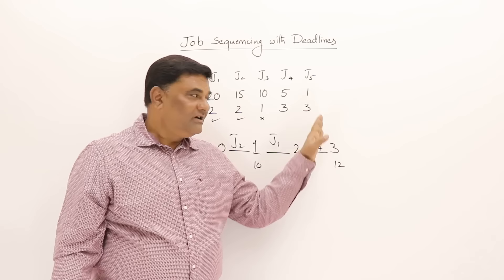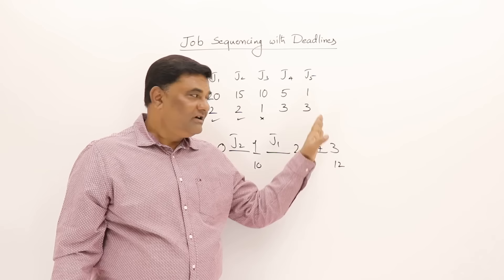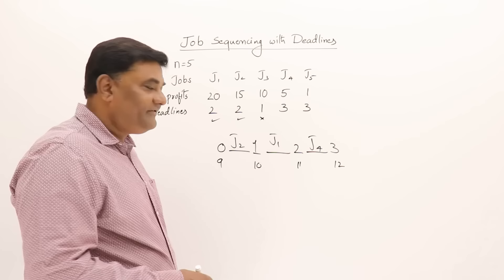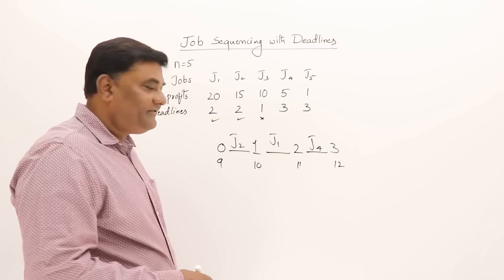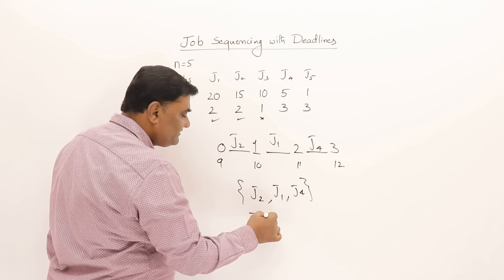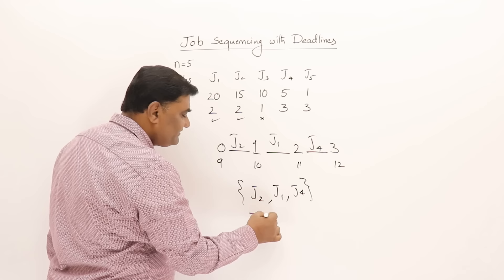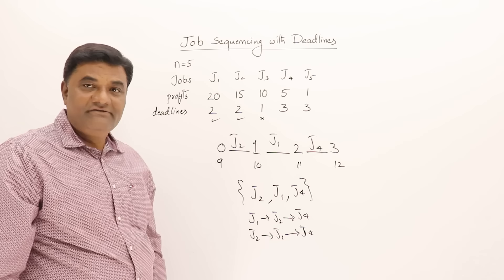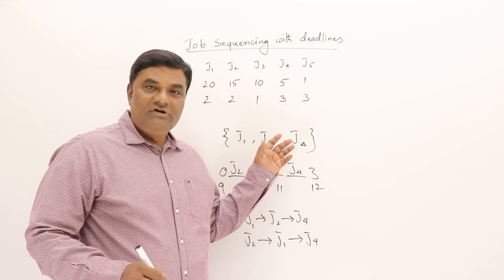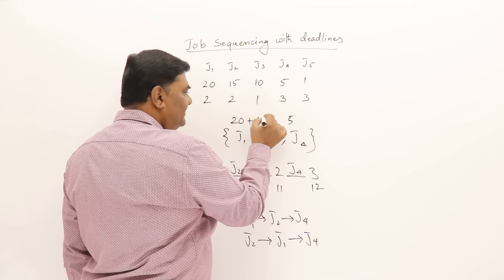Job five has no free slot available, so it is not selected. The solution is: we complete jobs two, one, and four. Since jobs one and two both have deadline two, the valid sequences are J1, J2, J4 or J2, J1, J4. The total profit is 20 plus 15 plus 5, which equals 40.